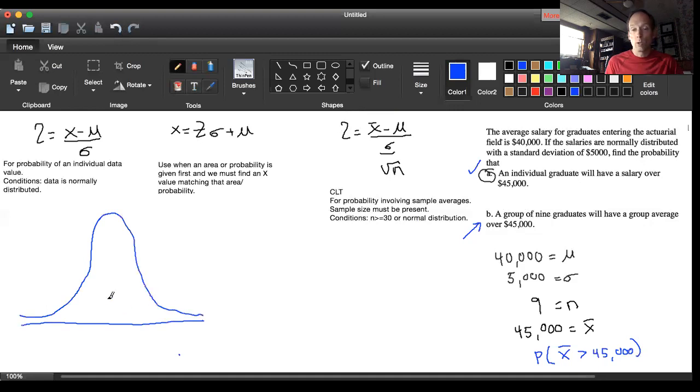The center of the curve, we're going to put in $40,000 again. My $45,000 is right here. And I'm going to shade in the area we're looking for.